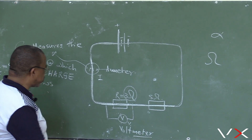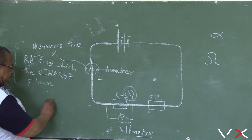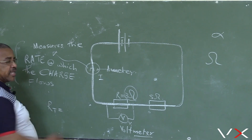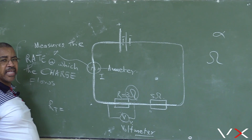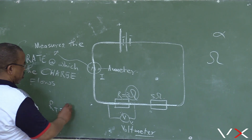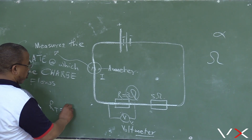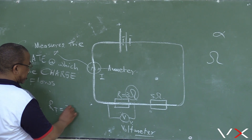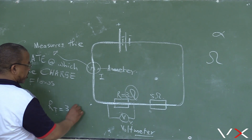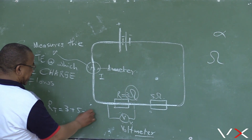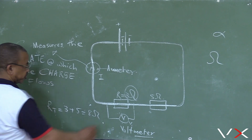Gujuti in total, in total, i experience a resistance — ka ganana — u 3 ohms plus 5, which is how much? 8 ohms.